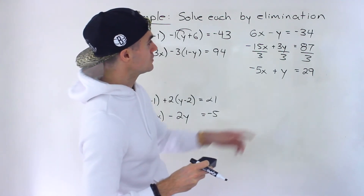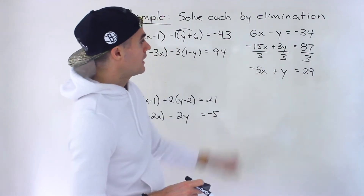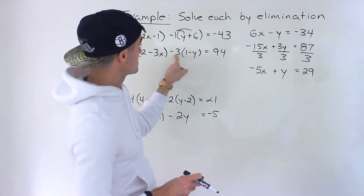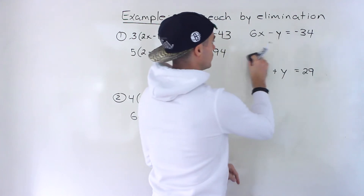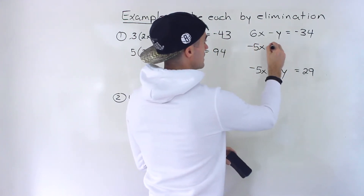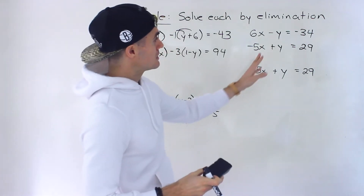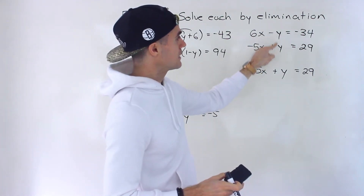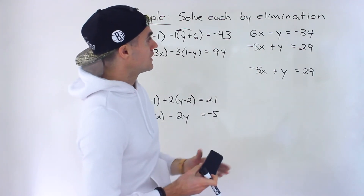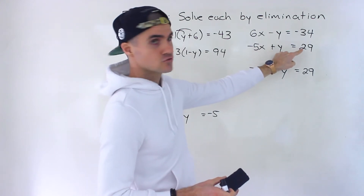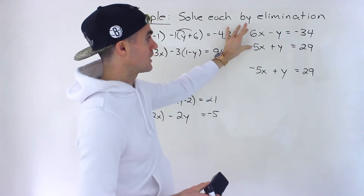You don't necessarily have to — you could keep it as that. But whenever I see something where everything can divide by a number, I usually take that opportunity. So this line and that are the exact same thing. And what's nice here is that these already have the same coefficient in front. It's not exactly the same as negative 1 and positive 1, but all that means is we just have to add these at this point. If you kept that at negative 15x plus 3y equals 87, then you'd have to multiply by 3 and then subtract them — so you'd end up doing more work in that case.